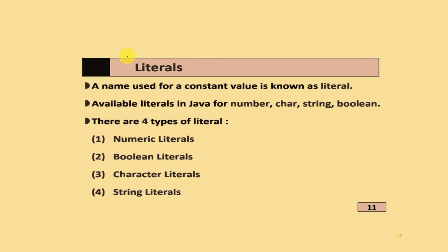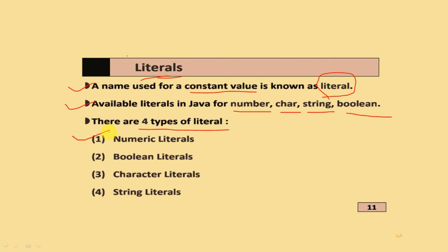Variable types: there are three kinds of variables - instance variables, class variables, and local variables. After that, literals: a name used for a constant value is known as a literal. Available literals in Java are for number, character, string, and boolean. There are four types of literals: numerical literals, boolean literals, character literals, and string literals.